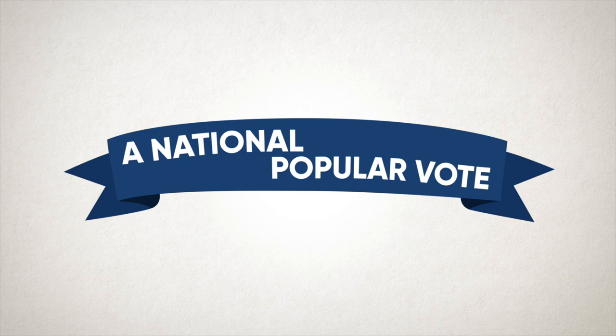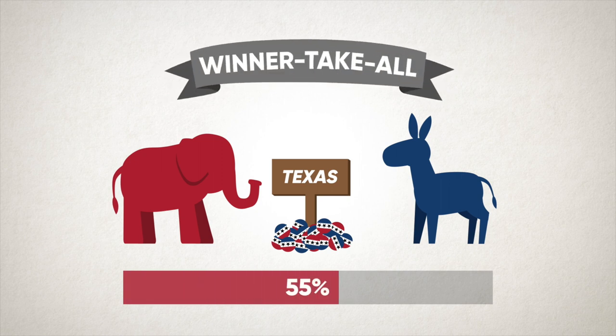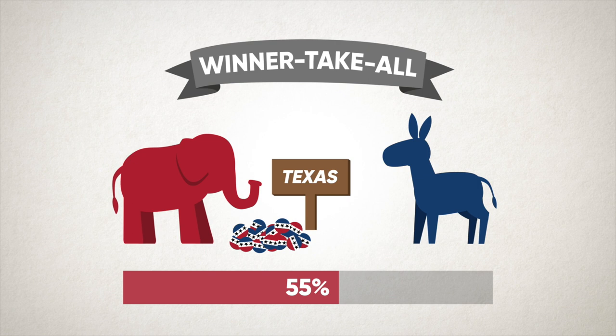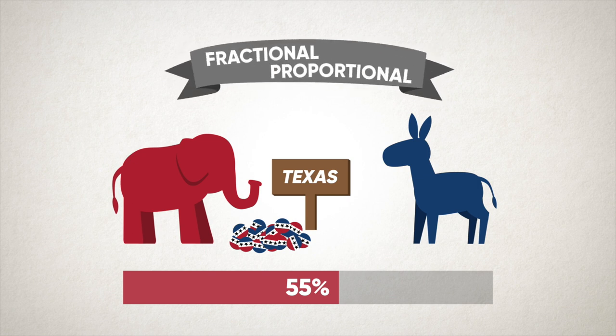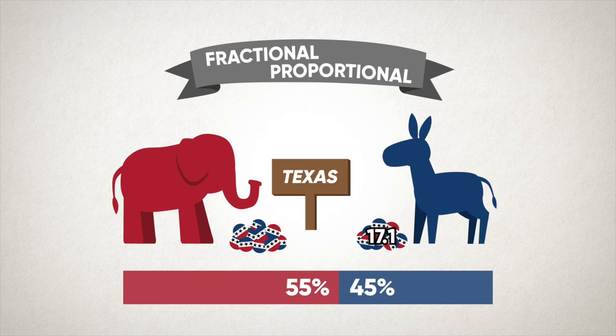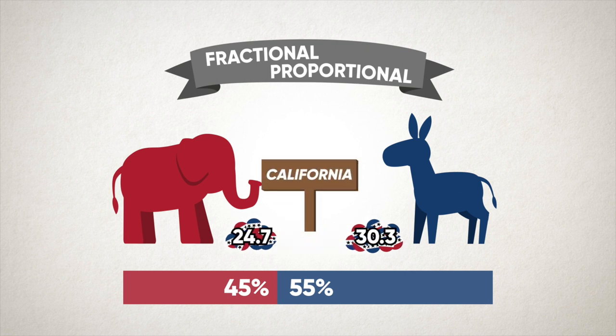But here's another proposal: what if states awarded electoral votes proportionately to the top two candidates rather than to just one? Say the Republican candidate received 55 percent of the vote in Texas — in a winner-take-all process, that candidate receives all 38 of the state's electoral votes. But if Texas awarded electoral votes proportionately, the Democratic candidate would receive 45 percent of the electoral votes — 17.1 of them, to be precise. And if the Republican candidate received 45 percent of the votes from California, that candidate would receive 24.75 electoral votes there instead of zero.